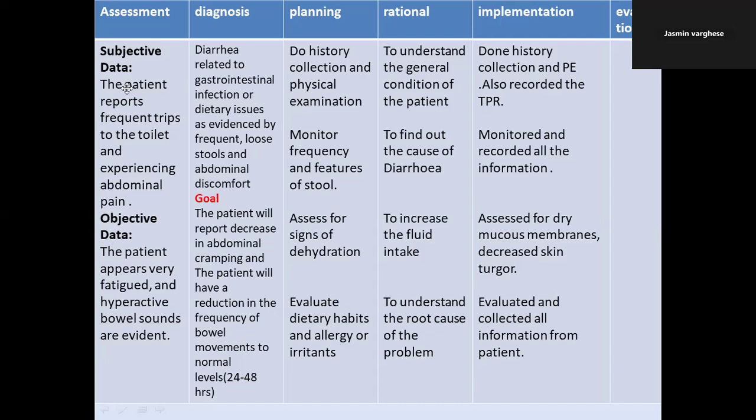The third planning item is to assess for signs of dehydration. This is very important because water is being lost from the body with each toilet trip. The rationale is to increase fluid intake. Assess for dry mucous membranes and decreased skin turgor. In implementation, document that you checked the skin and mucous membranes.